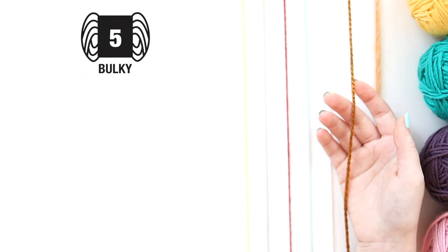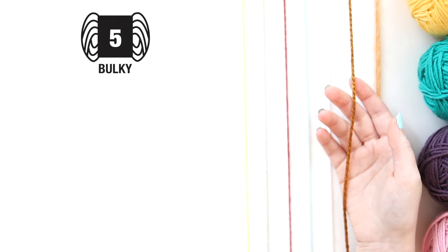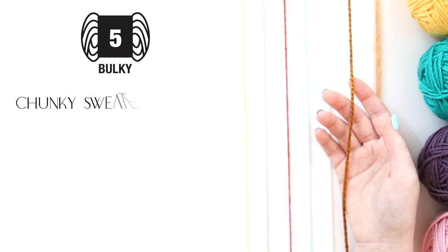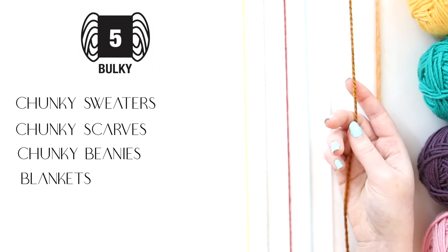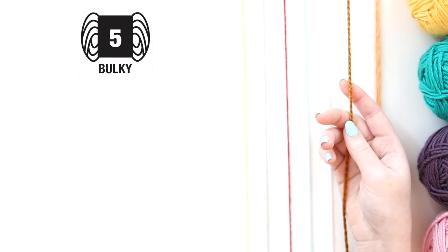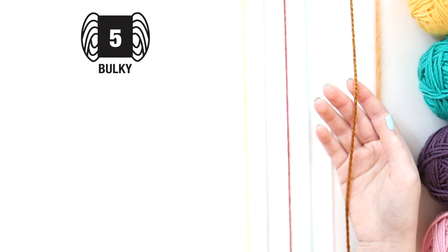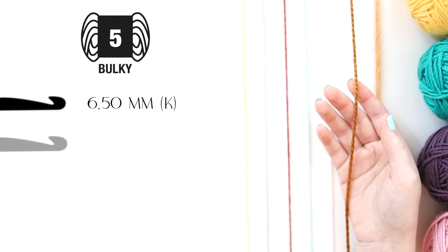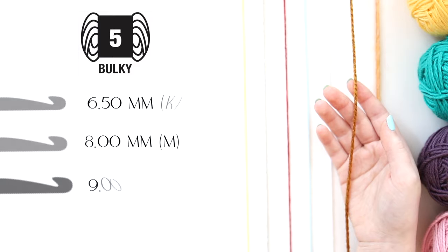Continuing the trend, we have a slightly thicker yarn here, which is a weight five yarn, also known as chunky or bulky yarn. This yarn is still often used for garments, even though it's a little bit on the thicker side, but it can be used for chunky sweaters, scarves, and beanies, but it starts to be more commonly used for blankets. The general recommended hook sizes are 6.5mm, an 8mm, and a 9mm.